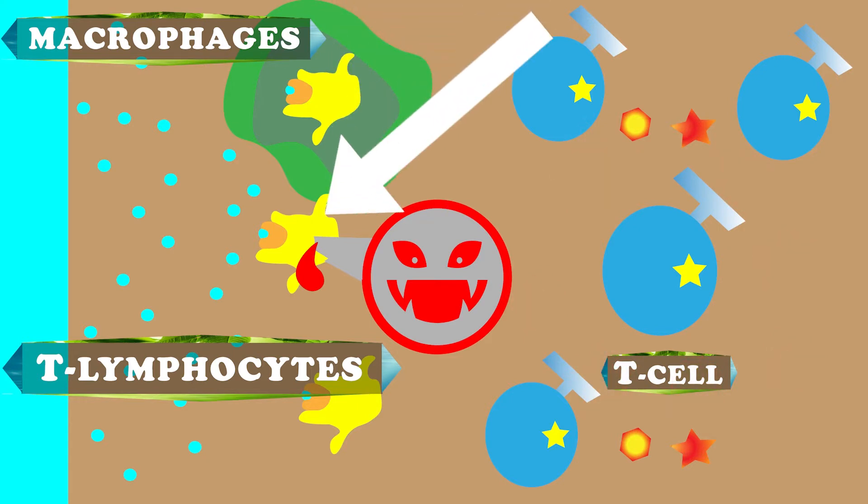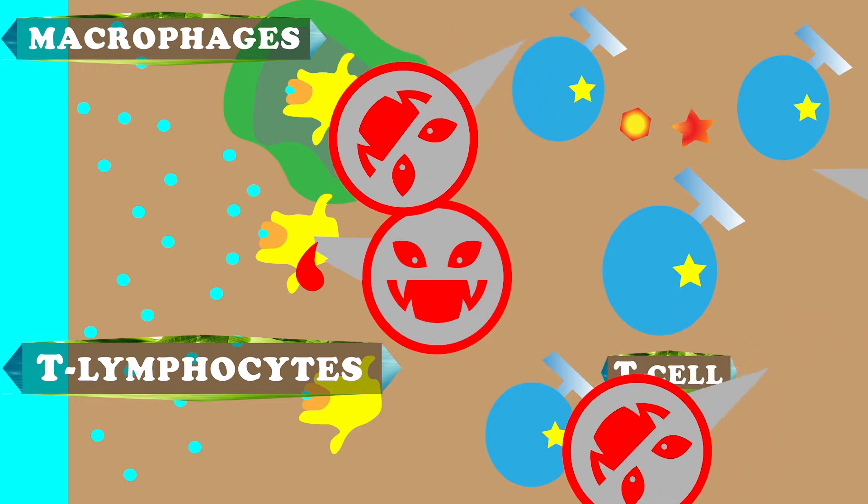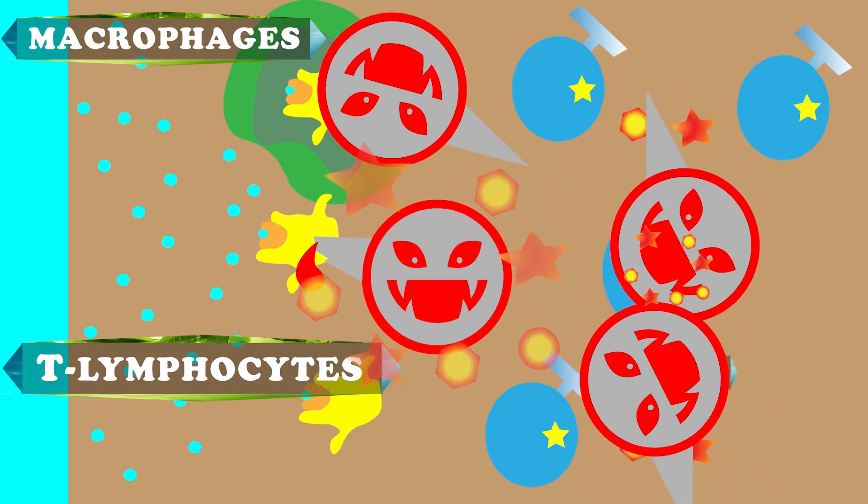T lymphocytes kill the Langerhans cell that grabbed the protein that had originally grabbed the urushiol. However, these T lymphocytes kind of go bonkers and start killing healthy cells as well.